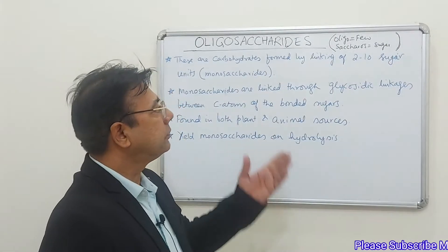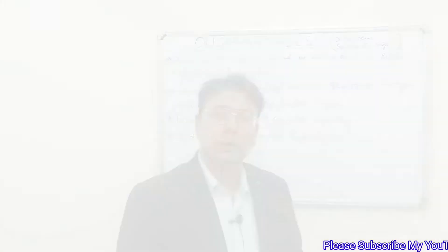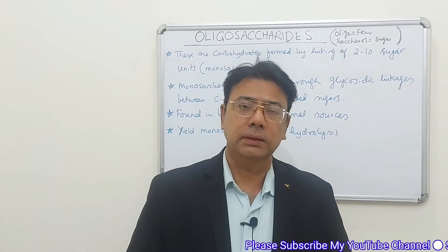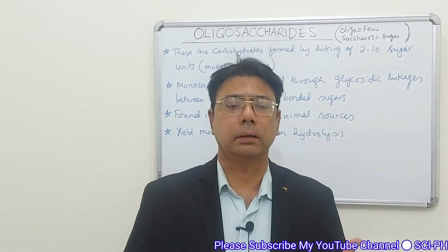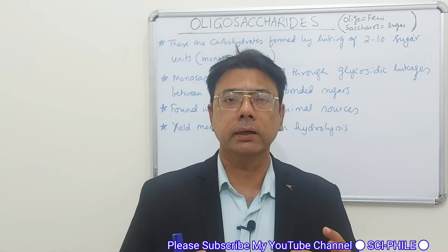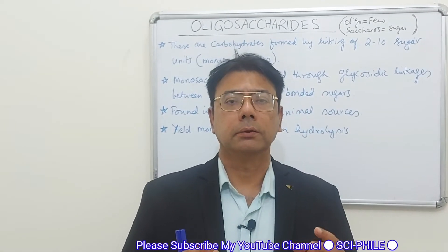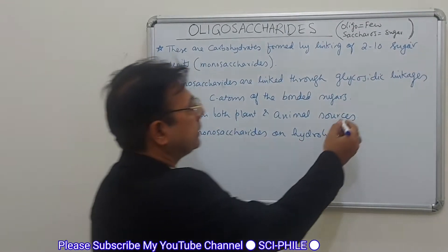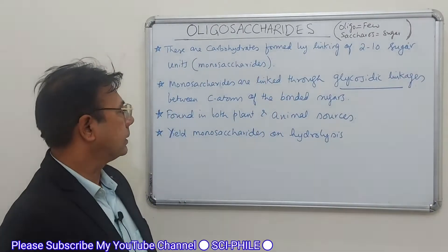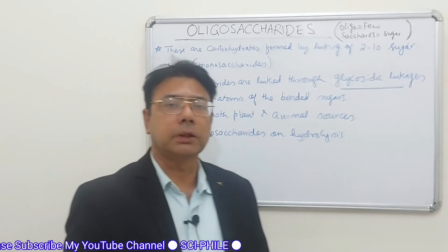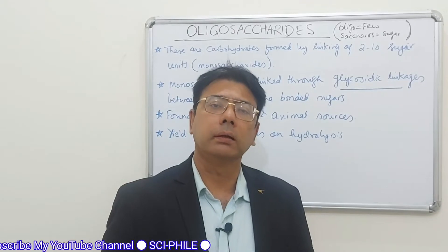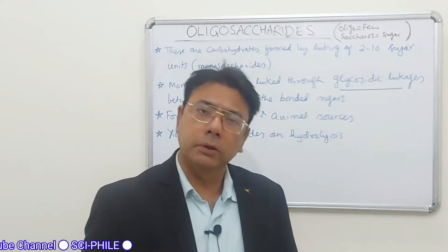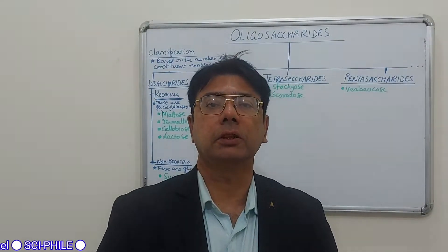With this we are in a good position to move on to oligosaccharides. As I said earlier, 'oligo' means few and 'saccharose' means sugars. Oligosaccharides are carbohydrates made up of few sugar units — they are made up of monosaccharides linked through glycosidic linkages. These sugars are abundantly found in both plant and animal sources.